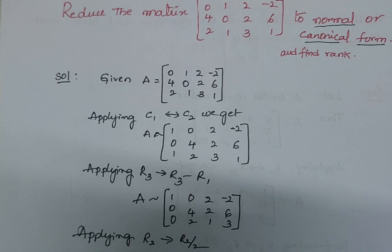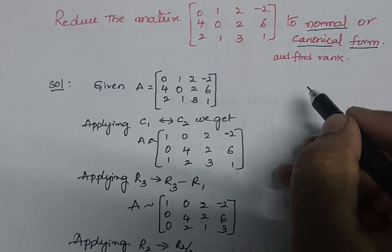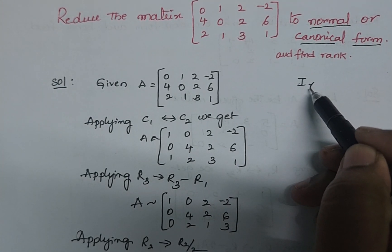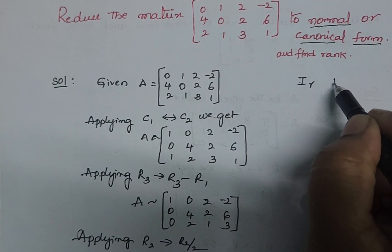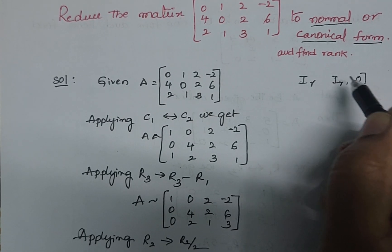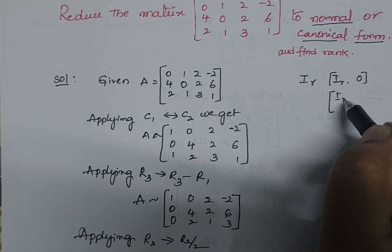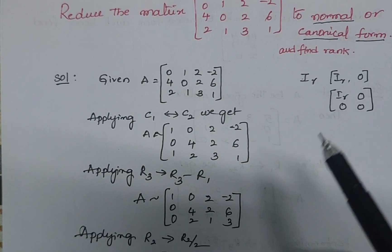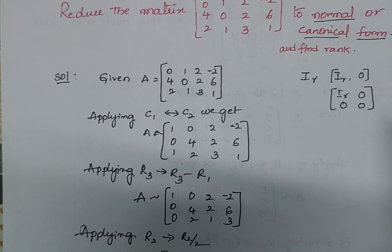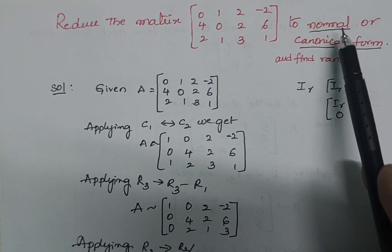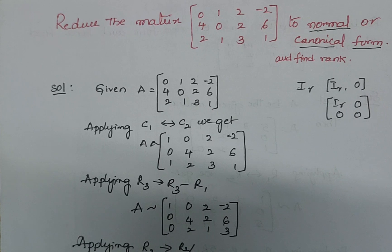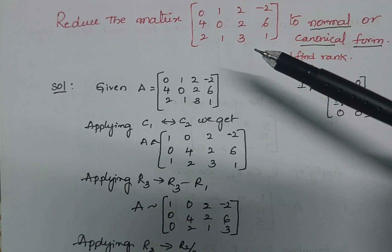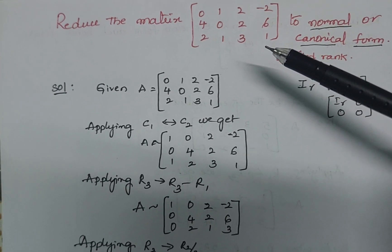Normal form or canonical form is nothing but reducing the matrix into one of these forms: identity matrix of order R (I_R), the form [I_R | 0], [I_R; 0], or [I_R, 0; 0, 0]. To reduce any given matrix into any one of these forms, we say that matrix is in normal form or canonical form. Now we are going to reduce the given matrix into normal form and also find the rank of the given matrix.